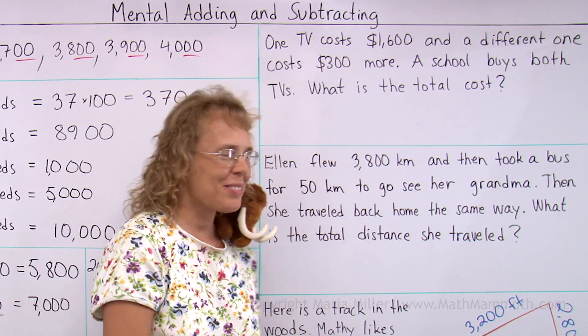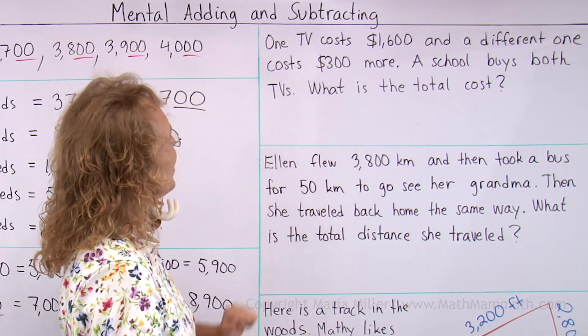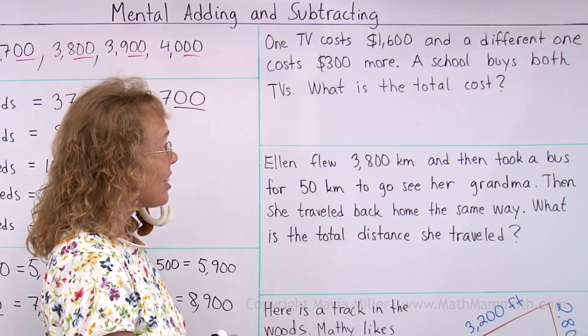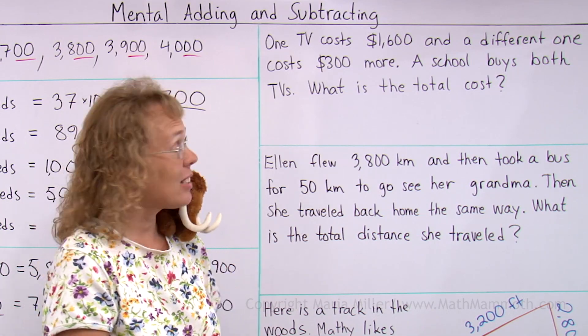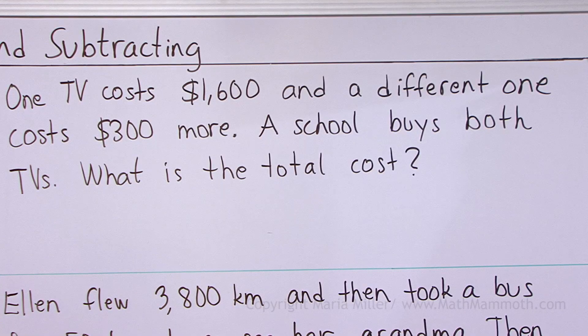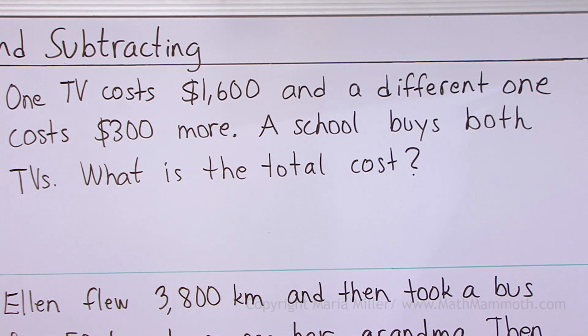Some word problems. One TV costs $1,600. Wow, that's an expensive TV. And a different one costs $300 more. A school buys both.